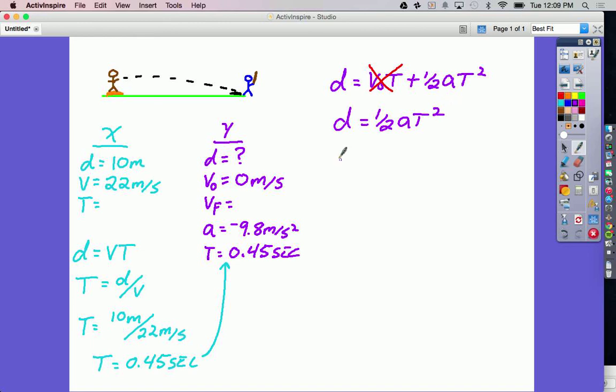Now I just have to plug in my numbers and solve. One half times negative 9.8 meters per second squared times 0.45 squared. When you plug that into your calculator, you should get negative 0.99 meters.